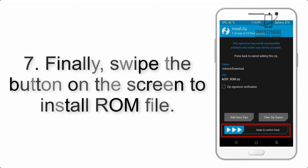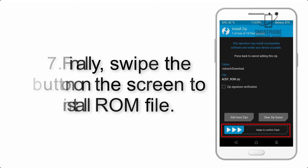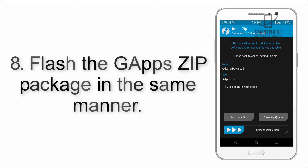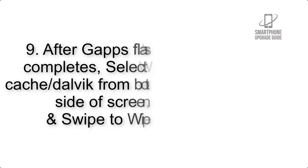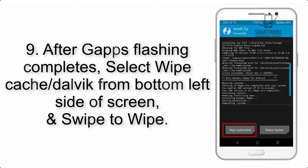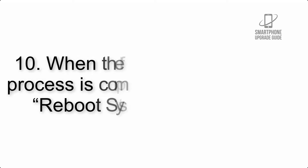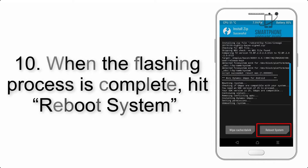Step 7: Swipe the button on the screen to install the ROM file. Step 8: Flash the GApps zip package in the same manner. Step 9: After GApps flashing completes, select Wipe Cache and Dalvik from the bottom left side of the screen and swipe to wipe.